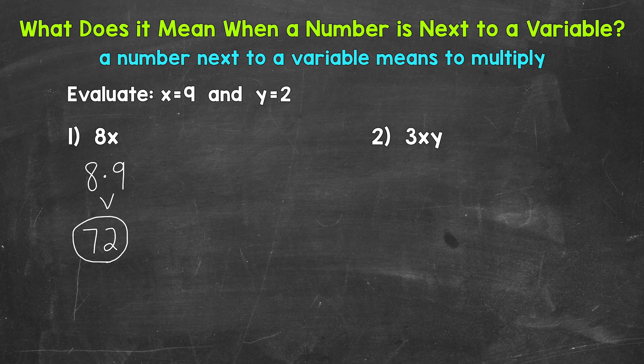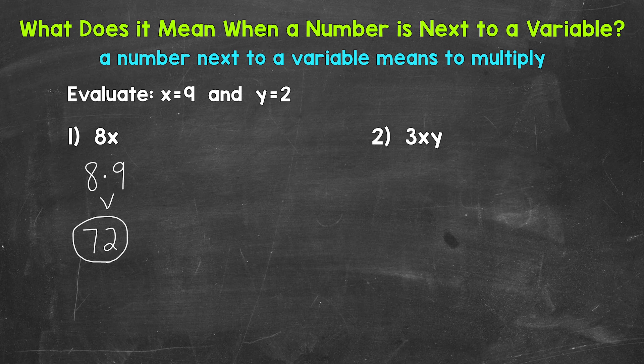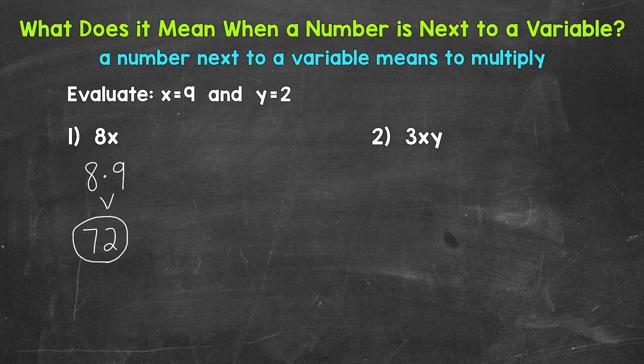One thing I do want to mention about plugging values in for variables when we have a number next to a variable, make sure to use something to represent multiplication. For example, I used a dot. We cannot put two numbers next to each other in order to represent multiplication. For example, in number 1, if we were to put the 8 and the 9 next to each other, that would look like 89. That does not mean 8 times 9.